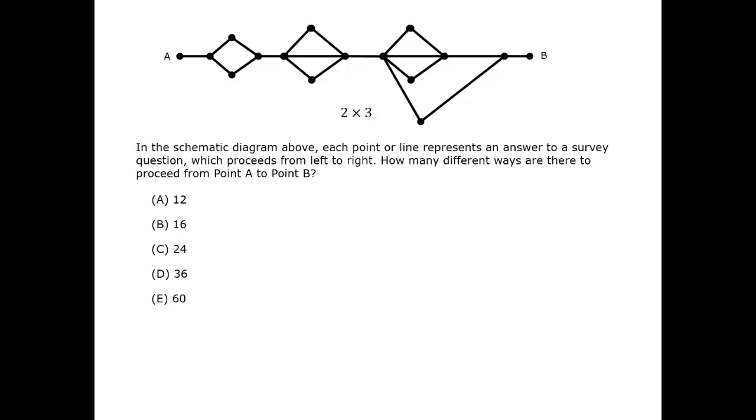There are four ways of crossing the final juncture, so the number of paths to get to that place is two times three times four equals 24. The correct answer is C.